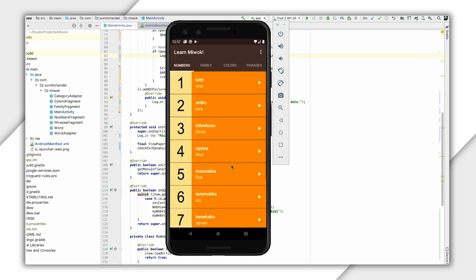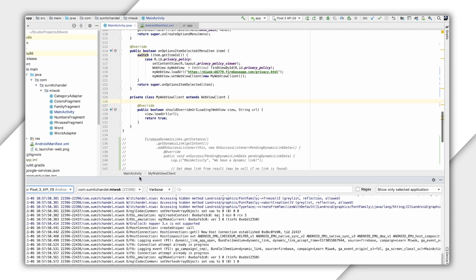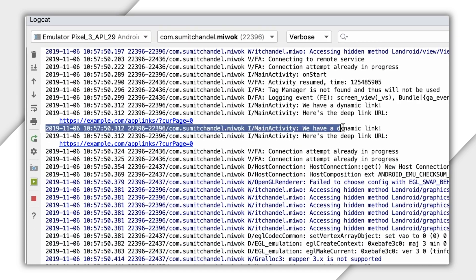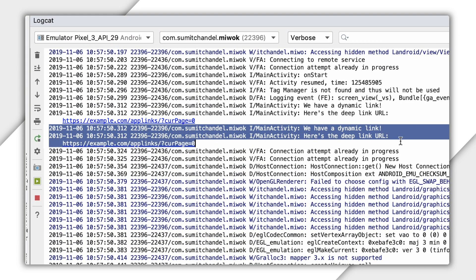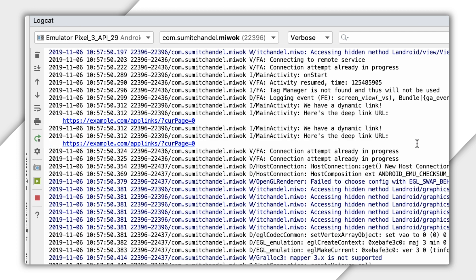Okay. So on our device, my Learn Miwok app has opened up as expected. And if I look in the console output, I can see that yes, we did receive the dynamic link. And double yes, we were able to extract the deep link URL from the dynamic link data. But you know what? I'm not satisfied yet. I want to see this working when my app isn't already installed.